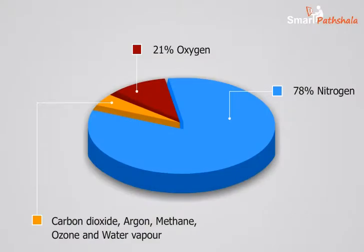We all know that air consists of a mixture of gases which include 78% of nitrogen and 21% of oxygen. The other gases like carbon dioxide, argon, methane, ozone and water vapor are also present in very small quantities.